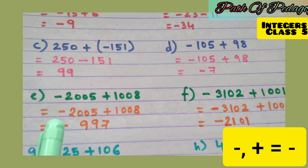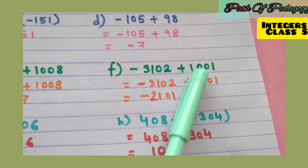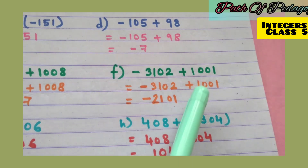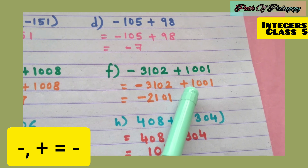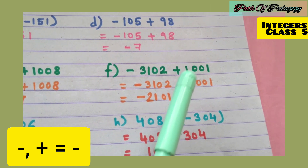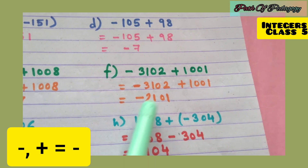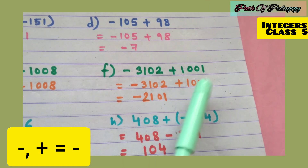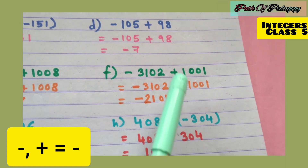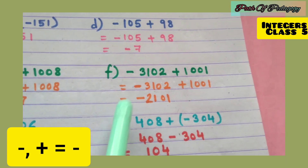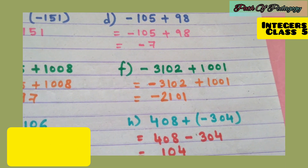Question f: −3102 + 1001. Minus plus is always minus, so we subtract: 3102 − 1001 = 2101. The bigger number is 3102 and its sign is minus, so the answer is −2101.